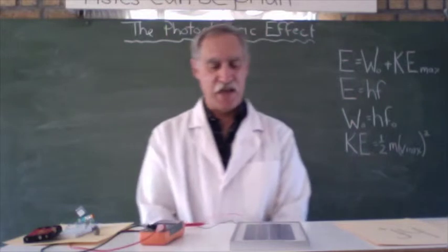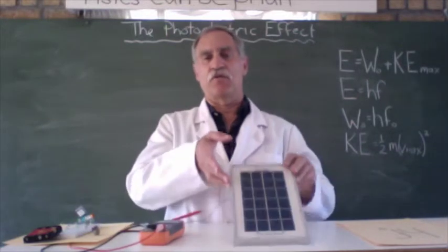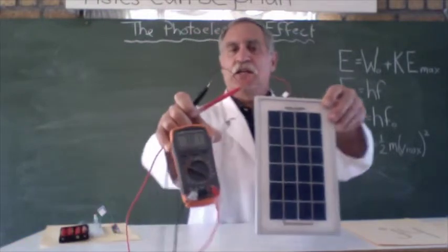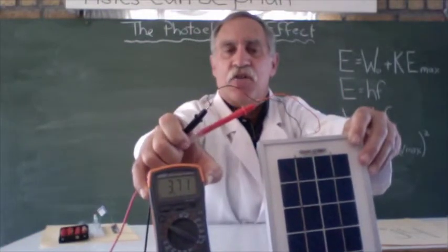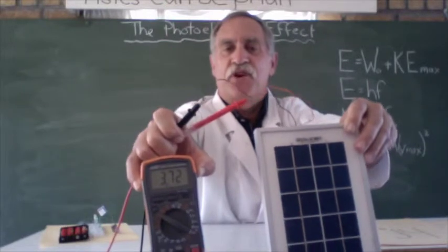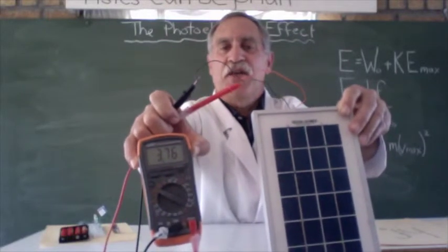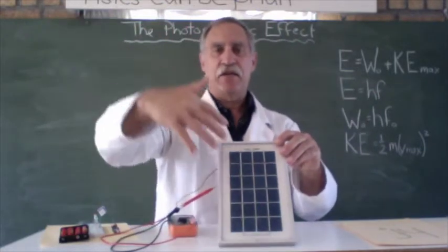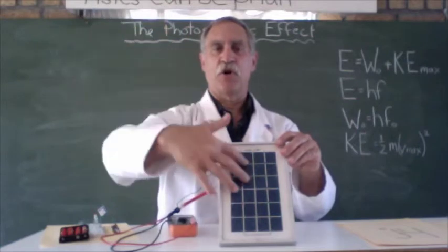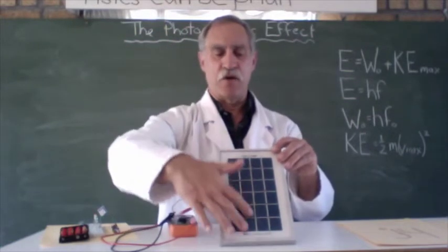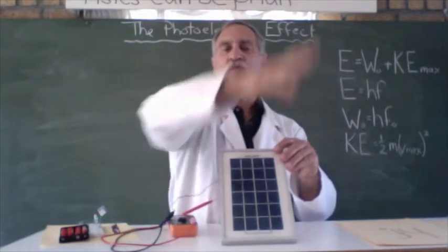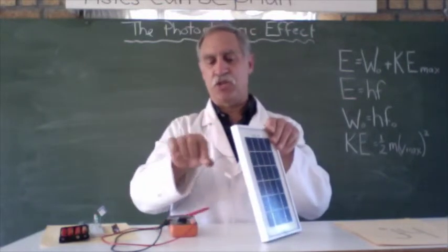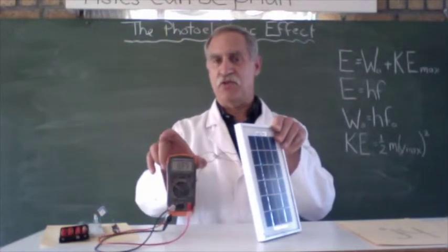The photoelectric effect is very similar to the photovoltaic effect. Here we have a photovoltaic cell, and you can see that it's generating a voltage of just over three volts. The two effects are very similar in that light photons fall on a metal and electrons are emitted. In the photovoltaic effect, the electrons are emitted onto a wire which goes to our voltmeter.